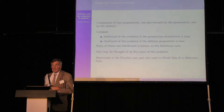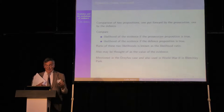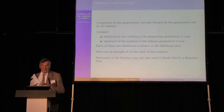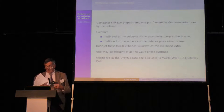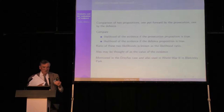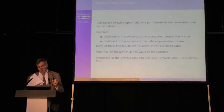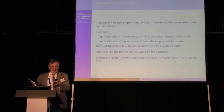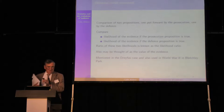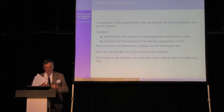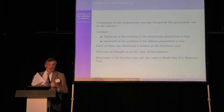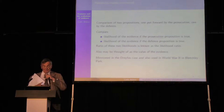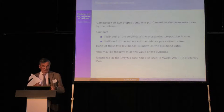What we are working towards is comparing two propositions — one put forward by the prosecution, one by the defence — looking at the likelihood of the evidence if the prosecution proposition were true, and the likelihood of the evidence if the defence case were true. This was mentioned in the Dreyfus case, a report by the mathematicians Darboux, Appell and Poincaré, saying the evidence is so many times more likely if the prosecution's case was true than if the defence case was true, but not being able to say anything about whether the actual proposition was true itself. The ideas were used in World War II at Bletchley Park by Jack Good and Alan Turing, and from forensic science in the UK by Dennis Lindley in 1977 in a paper in Biometrika, looking at the refractive index of glass as a motivating example.